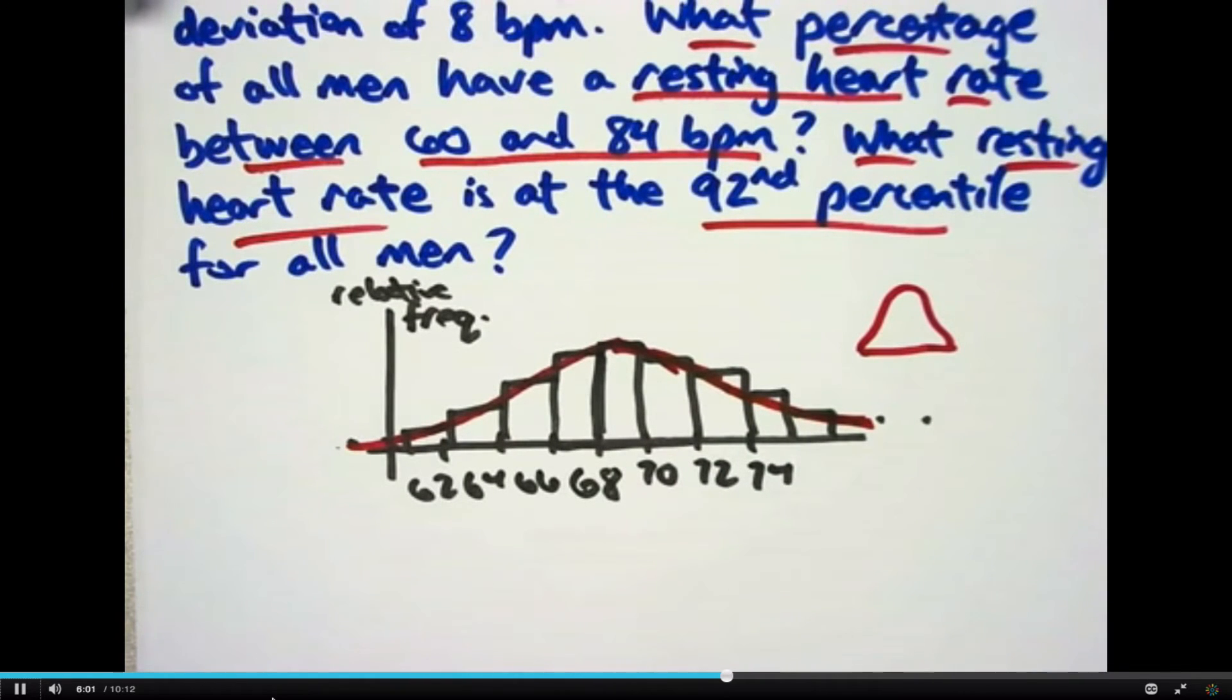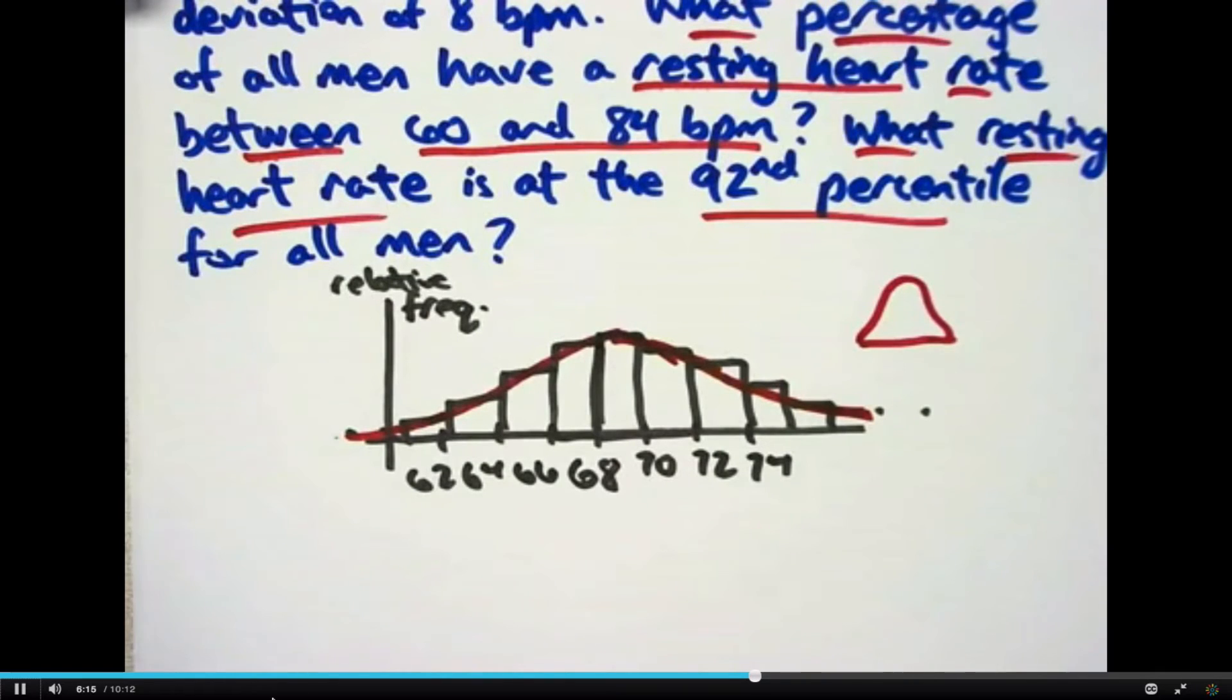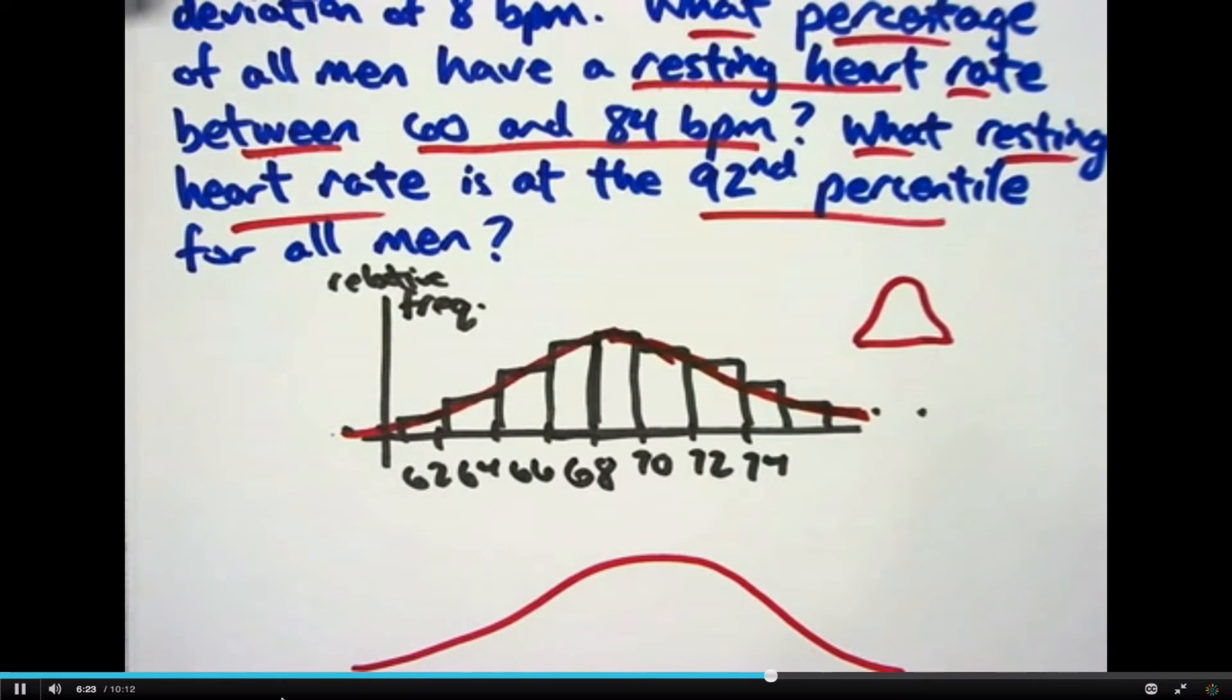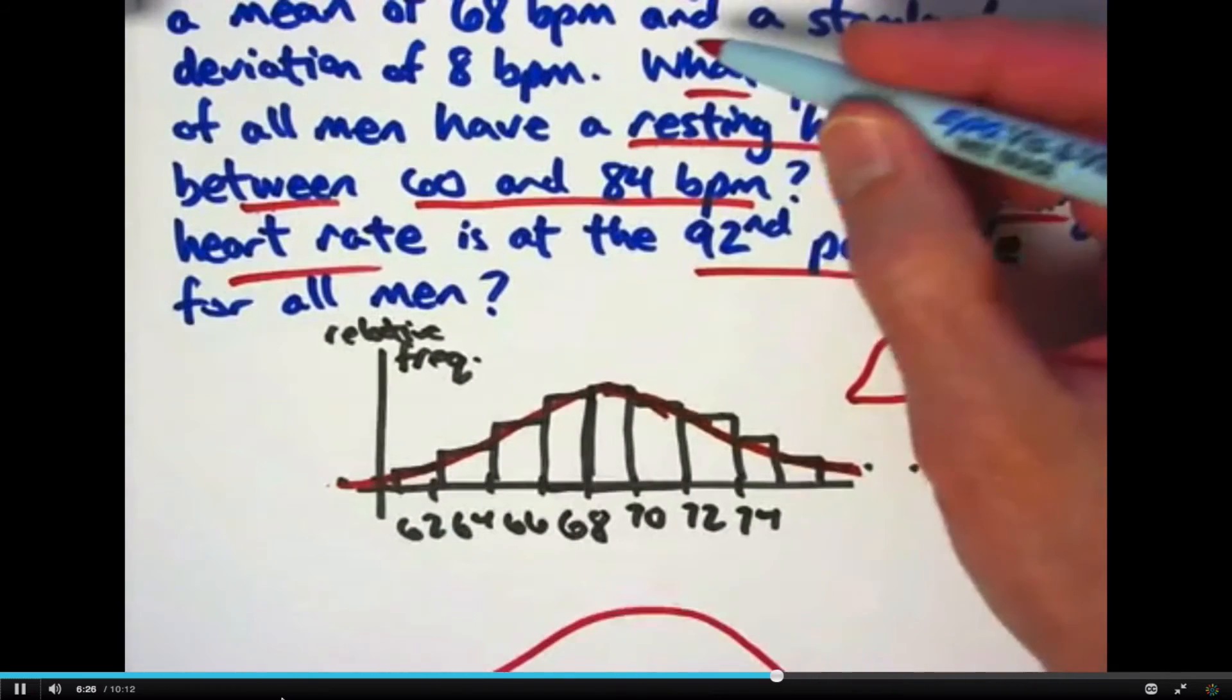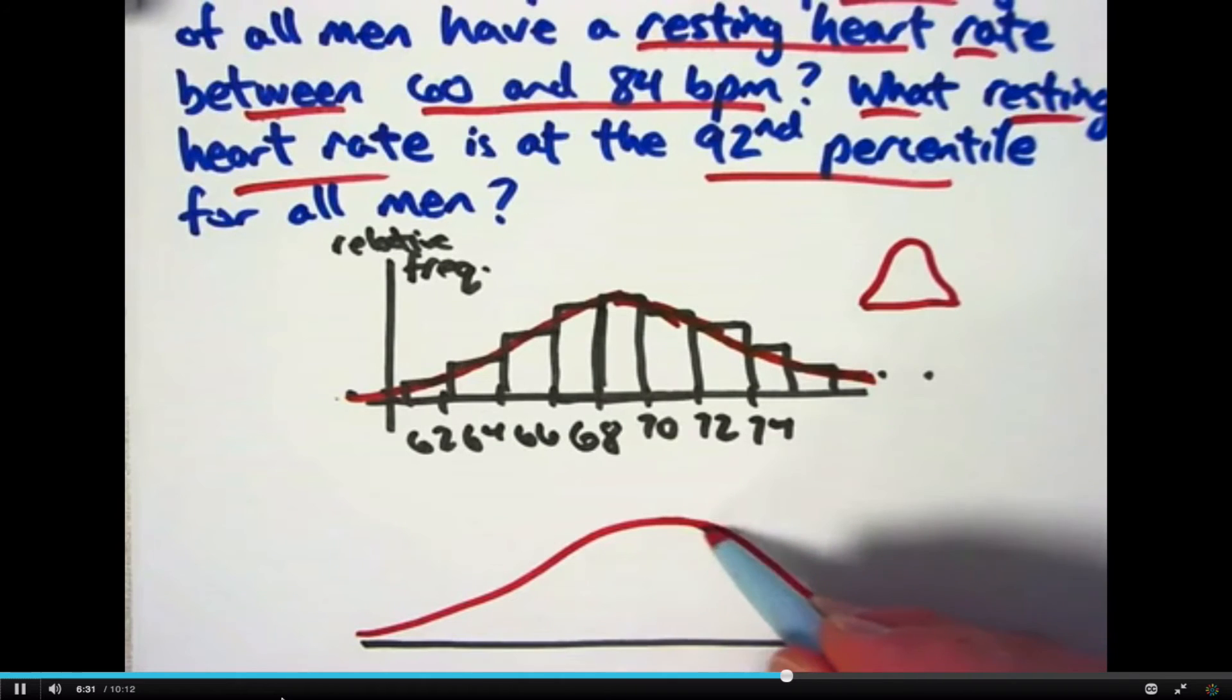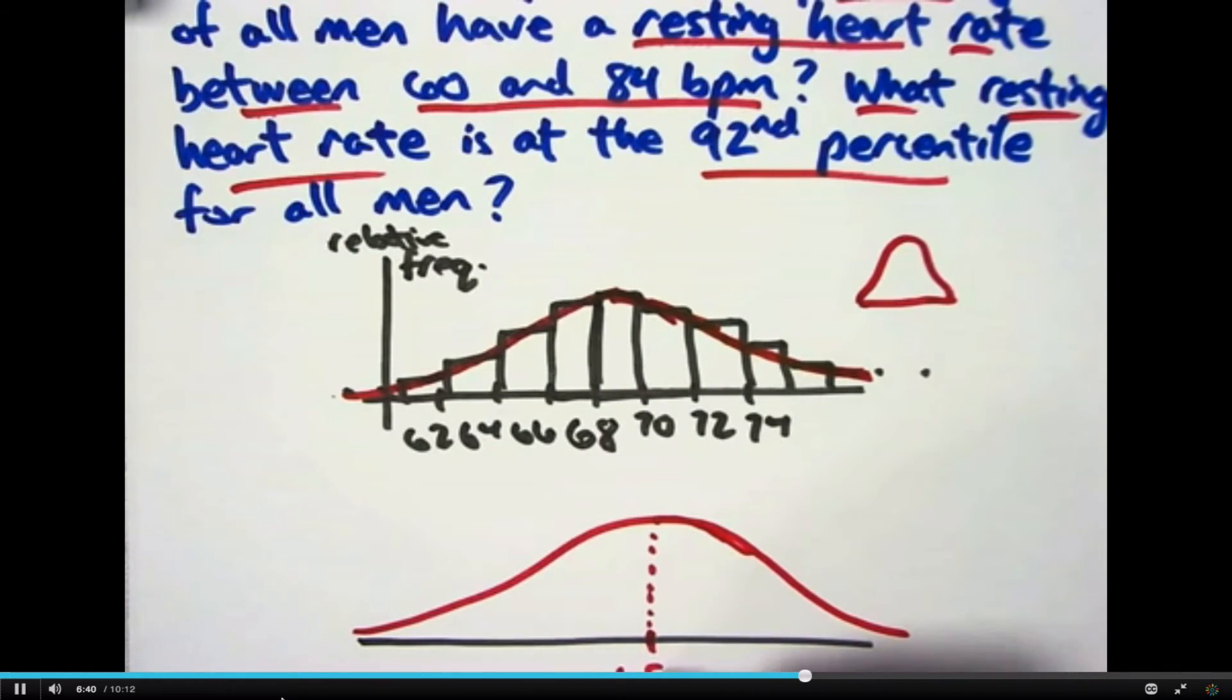Just suffice it to say that for most data, if you use the normal curves, the particular graphs that I'm talking about here, you'll get a pretty good match. Let me make another graph where I just draw the curve. Where is this curve going to be centered? Well, ideally, it's going to be centered on the mean of the distribution. The mean is going to be where the peak is. That's the highest point, right about there. This is going to be at 68 beats per minute.